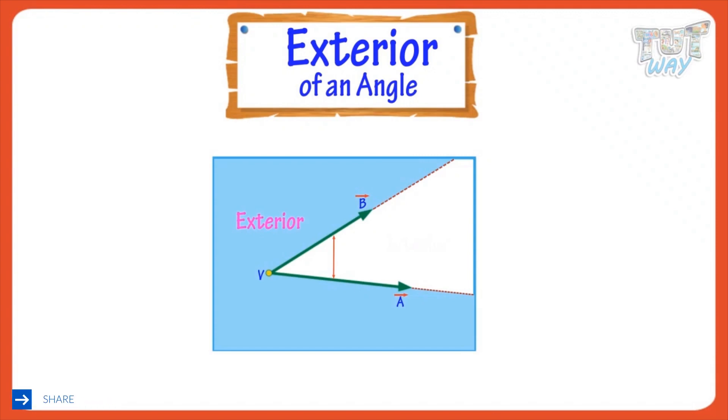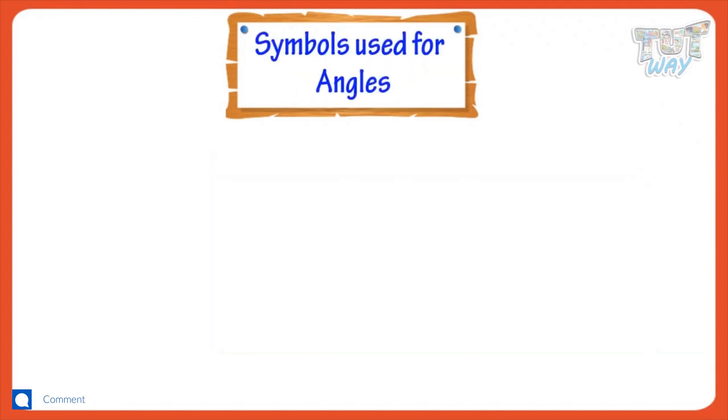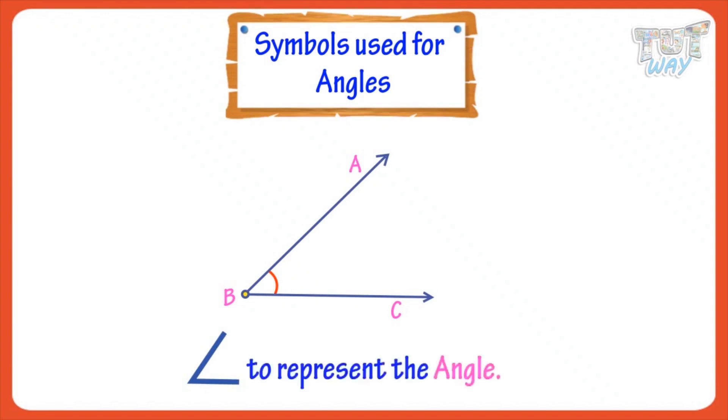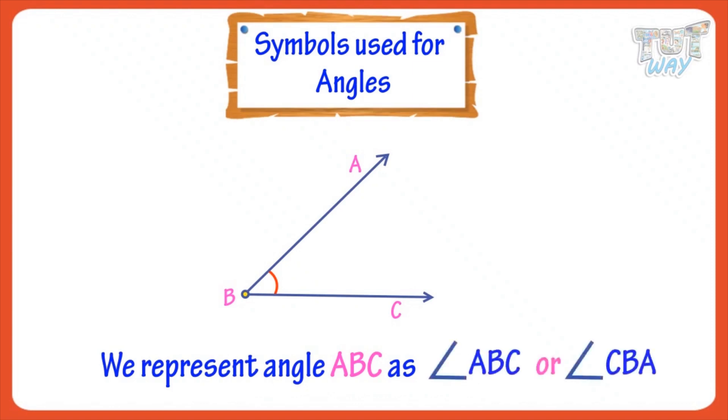Now, let's see the symbols used for representing the angles. This is a symbol to represent an angle. We represent angle ABC like this, where vertex is always placed in the center. Here, vertex is B.